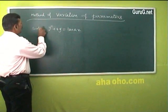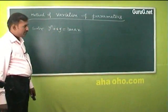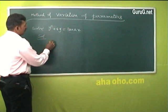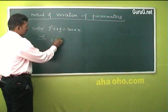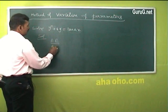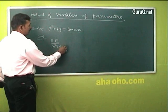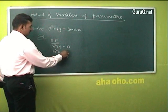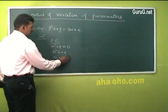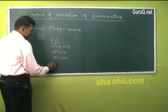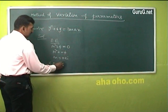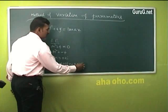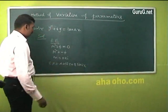So solve y'' + 4y = tan(2x). First, find the auxiliary equation: m² + 4 = 0, so m² = −4, giving m = ±2i. Then the complementary function is CF = a·cos(2x) + b·sin(2x). This is the usual method for finding the complementary function.